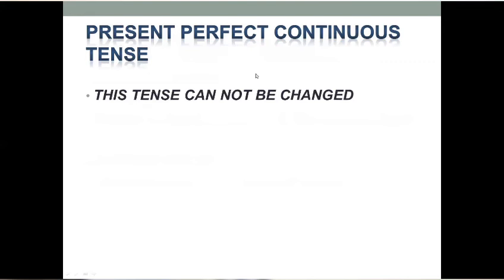Next हमारे पास है Past Perfect Continuous Tense — this tense cannot be changed. Rules के according Past Perfect Continuous Tense को हम active passive में change नहीं करते हैं। तो यह थी मेरी आज की वीडियो Active Passive Past Tense। I hope so कि आप सब को आसानी से समझ आ गई हो। अगर आपको वीडियो अच्छी लगी तो please इसको like करें, share करें और मेरा channel subscribe करें ताकि आपको आने वाली वीडियो आसानी से मिल सकें। Thank you so very much, have a nice day.